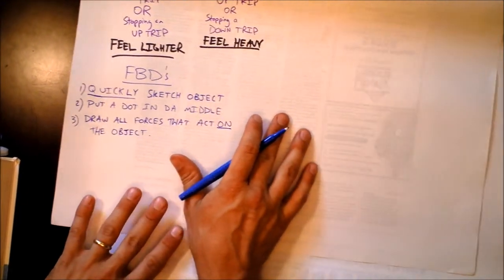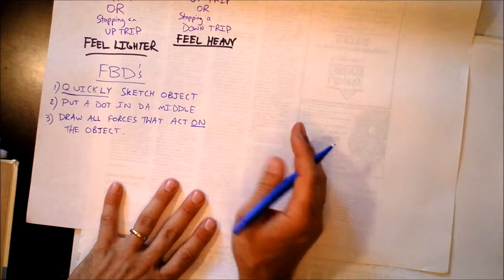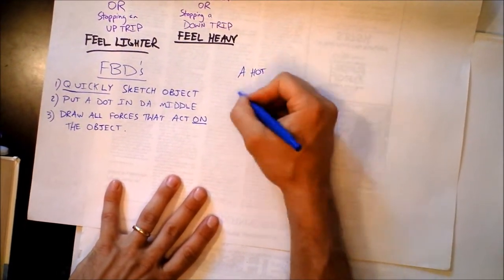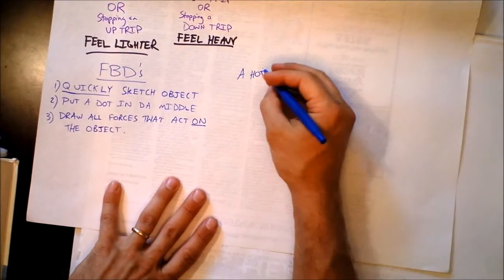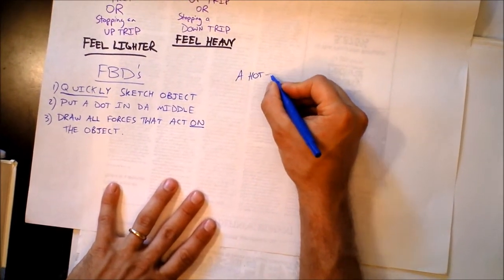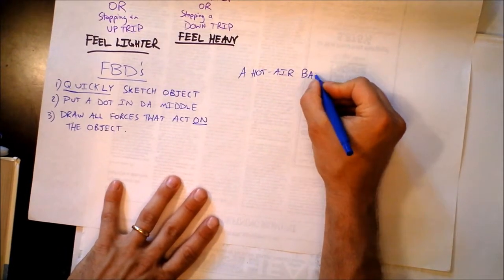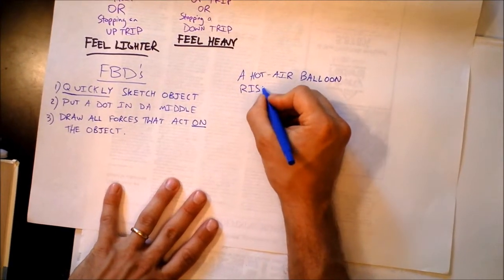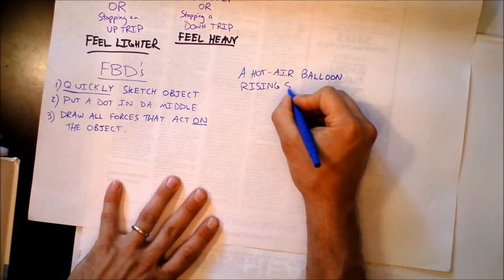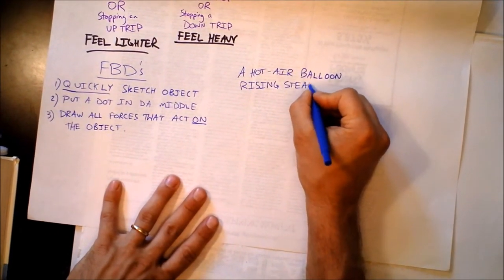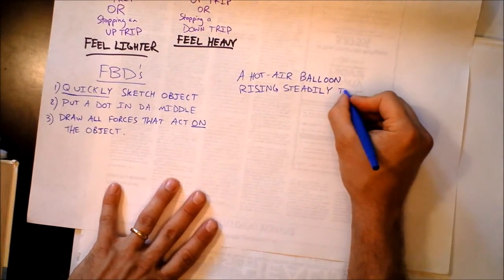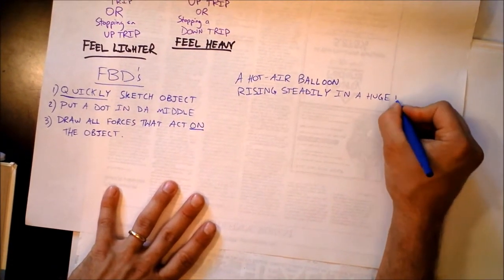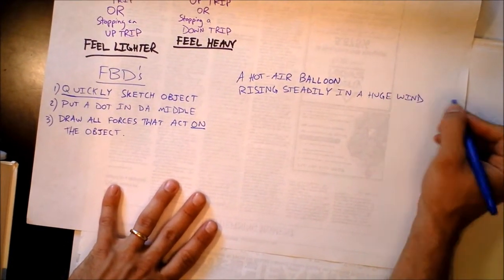We'll do an example of a free body diagram for a hot air balloon, and I'll label my free body diagram so that you know what's going on. This is a hot air balloon rising steadily in a huge wind.